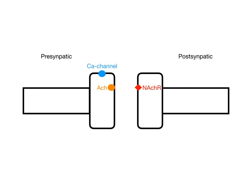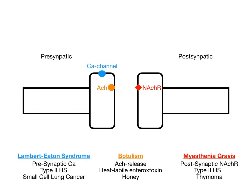There are three disease processes you should know that can occur when any one of these processes gets messed up. Using the color coding: we have Lambert-Eaton syndrome, botulism, and myasthenia gravis. Lambert-Eaton syndrome corresponds to the calcium channel, botulism to acetylcholine release, and myasthenia gravis to the postsynaptic nicotinic acetylcholine receptor. Lambert-Eaton syndrome is due to destruction of the presynaptic calcium channels. Botulism occurs when you have problems due to acetylcholine release. Myasthenia gravis occurs when you have immune attack against the postsynaptic nicotinic acetylcholine receptors.